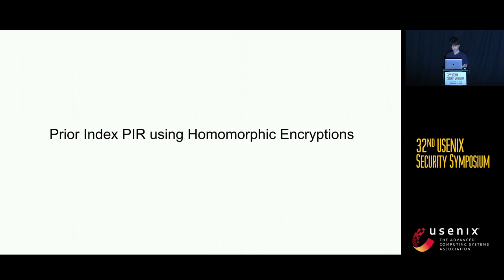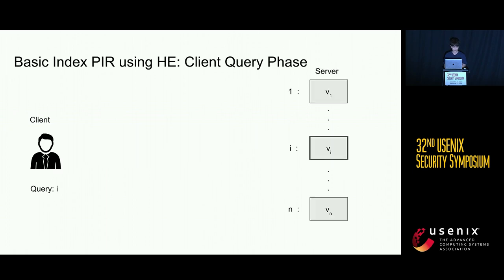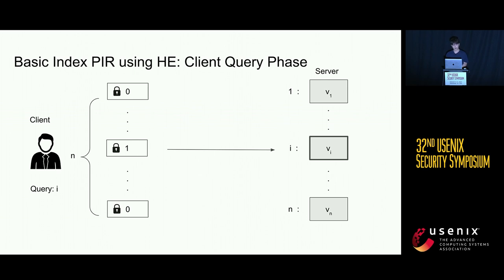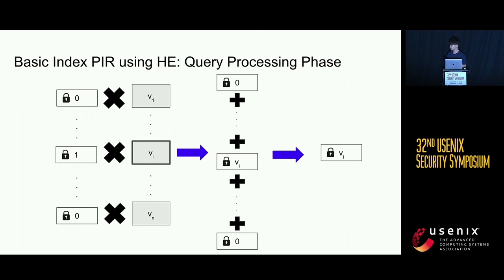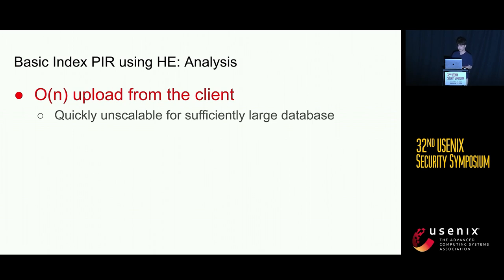We'll go over some prior index PIR schemes using homomorphic encryption. In this setting, same as before, we have two parties — the client and the server — and the server holds n database entries. Suppose the client wants to query for index i, so it wants to retrieve vi. The client constructs an encryption vector of length n, where every element encrypts to zero except for the ith index it wants to query for. The client sends this query vector to the server, which essentially just performs the dot product using homomorphic operations. It's easy to see that correctness holds in this case.